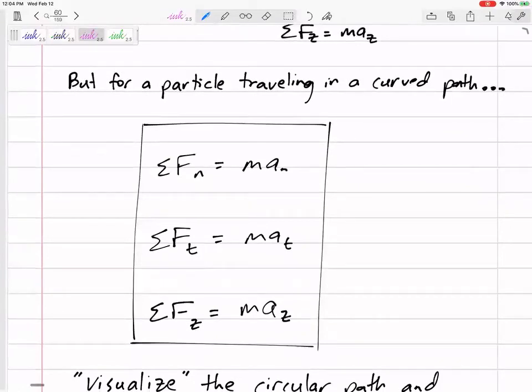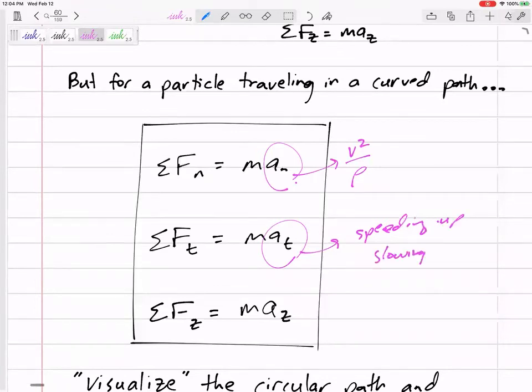And you know what the normal acceleration is, v squared over rho. You know what the tangential acceleration is, that's the speeding up slowing down, speeding up slowing down acceleration, and then maybe there was some other dimension.